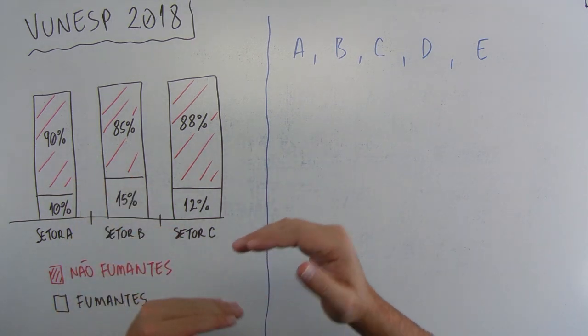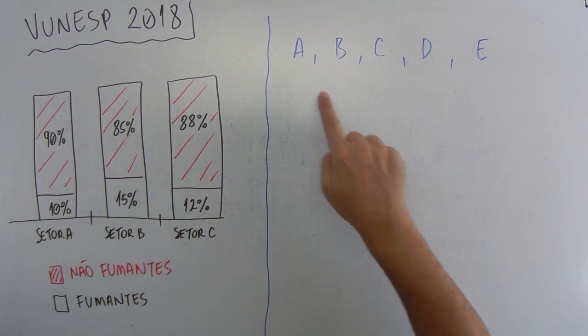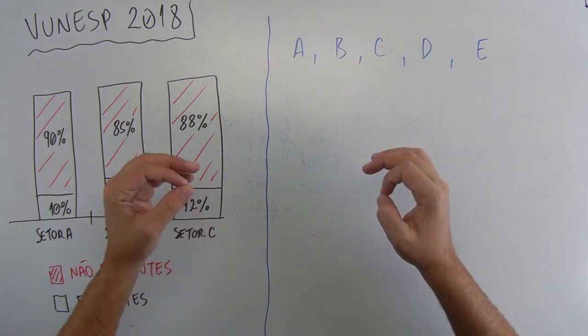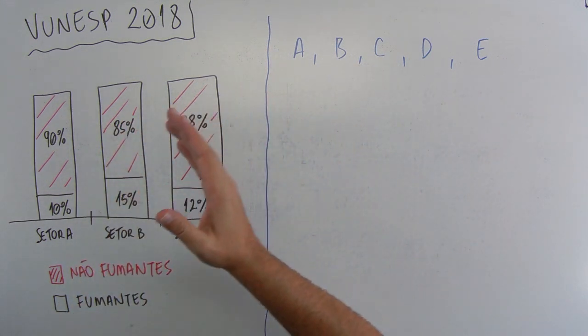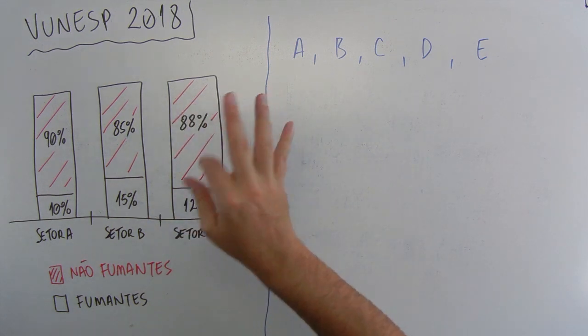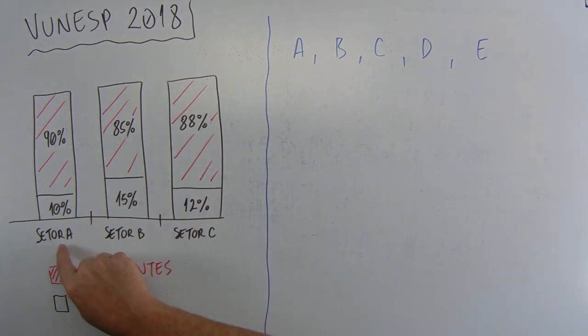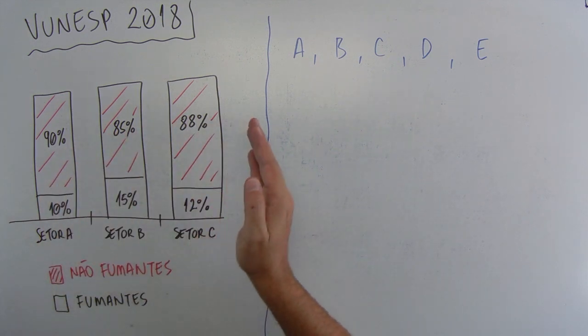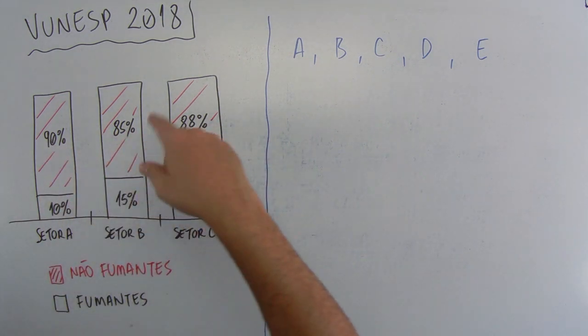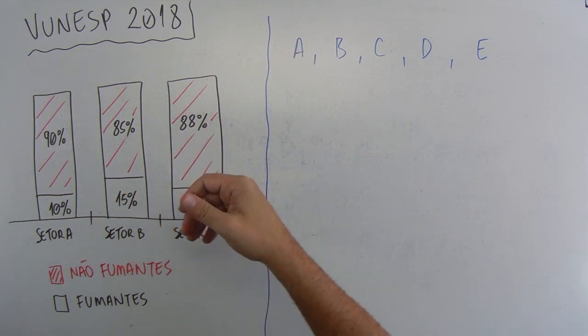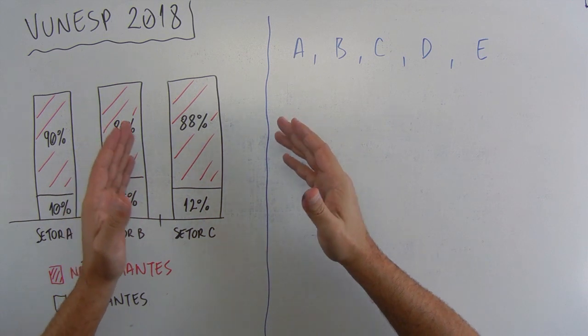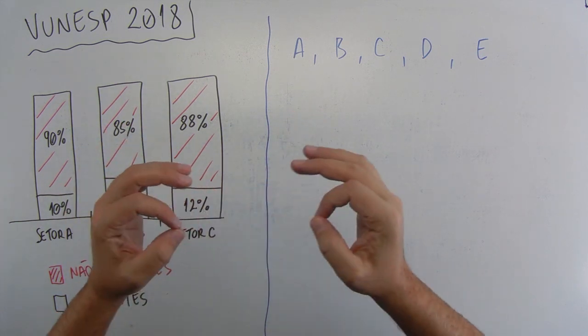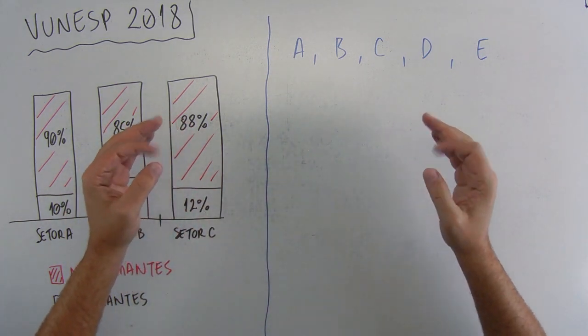Dito isso, a gente vai agora analisar o enunciado e, posteriormente, as alternativas. Então, vão aqui comigo. O gráfico apresenta a distribuição exata entre fumantes e não fumantes dos números de funcionários de três setores de uma empresa. Então, está aqui, setor A, B e C. A gente já percebeu aqui que os setores estão aqui e, se somar todas as porcentagens, vai dar 100%. Beleza. Com base nas informações apresentadas, assinale a alternativa que contém uma afirmação necessariamente verdadeira.